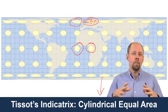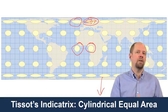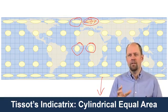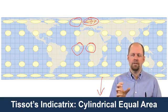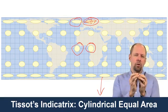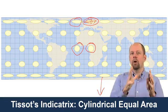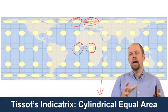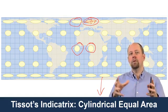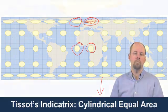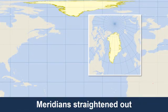In other words, if you were measuring the areas of something on the Earth — like the size of Greenland — more or less, if you're measuring large areas on a map, those areas would be the same as if you were measuring them on the reference globe.